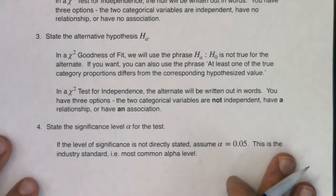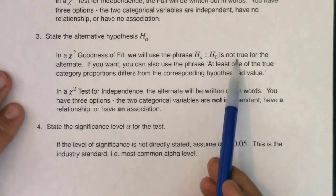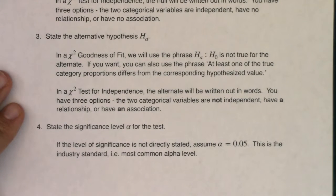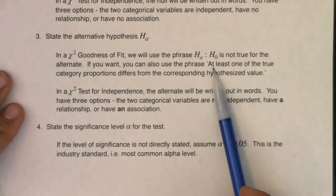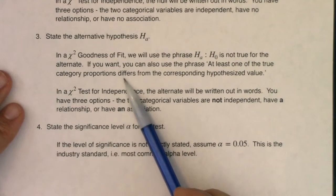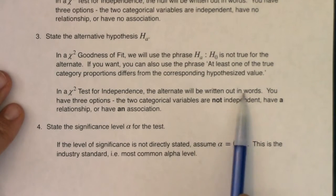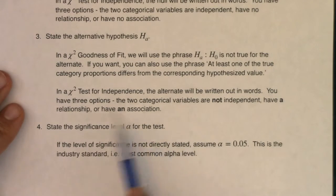For the alternate in a goodness of fit, use the phrase 'H-naught is not true,' or alternatively: 'at least one of the true category proportions differs from the corresponding hypothesized value.' What we're saying is that at least one proportion differs from what was stated in the null. For the chi-squared test for independence, the alternate is also written in words: the two categorical variables are not independent, have a relationship, or have an association. Pick one of those three options.